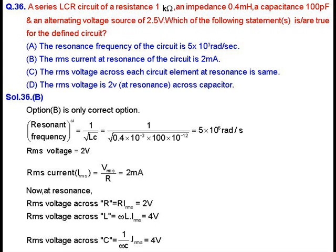The resonance frequency can be calculated as ω = 1 upon √(LC). Putting in the given values of L and C, we get ω = 5 × 10 raised to the power 6 radians per second. The RMS voltage will be equal to 2 volts. The RMS current, I_rms, will be equal to V_rms upon R, which equals 2 milliamperes.